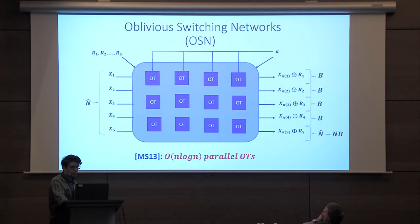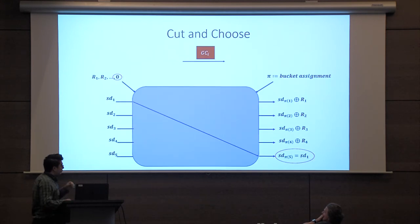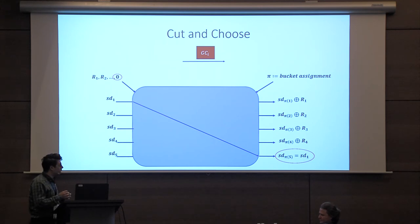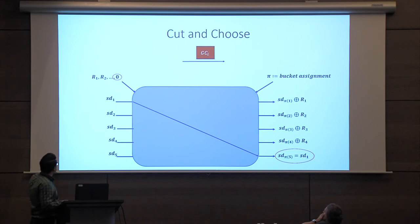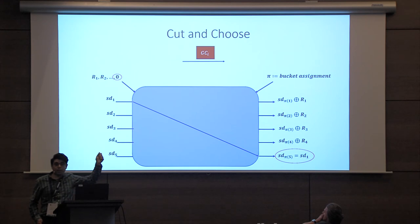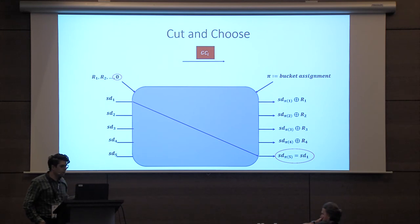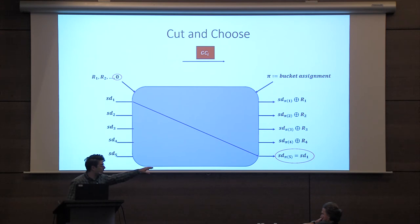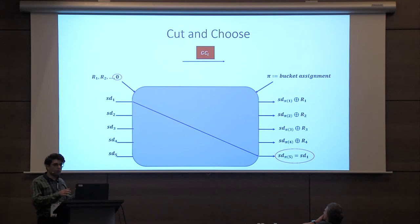With the oblivious switching network, things become easier. For cut-and-choose, the garbler feeds the seeds — openings for all garbled circuits — as inputs to the switching network. For the paddings, it uses random paddings for circuits to be evaluated and zero for circuits to be opened. As a result, only for circuits that are opened does the evaluator actually learn the seed; for everything else, it gets something random. This is how the switching network decides what is opened versus evaluated.